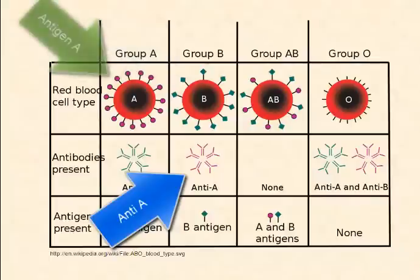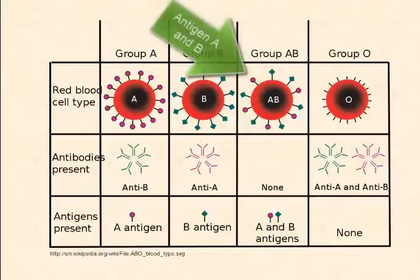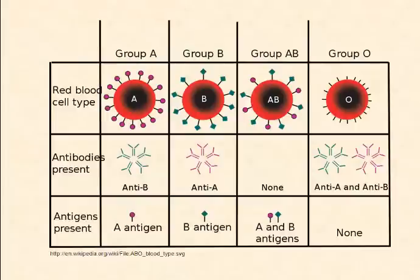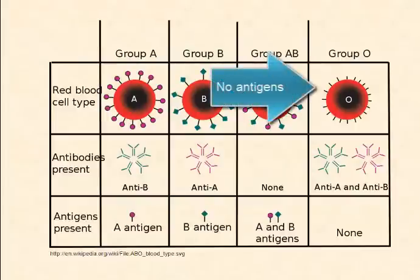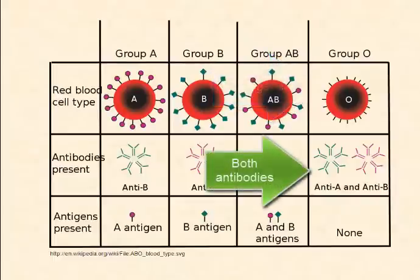Anti-A antibodies attack antigen A. So it makes sense that people who have blood type AB, and have both antigens on their red blood cells, would have no antibodies in their blood — if they did, they'd be attacking their own blood cells. And blood type O, which has no antigens on the surface of the red blood cells, actually has both antibodies present in the plasma.